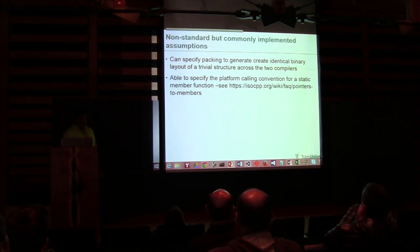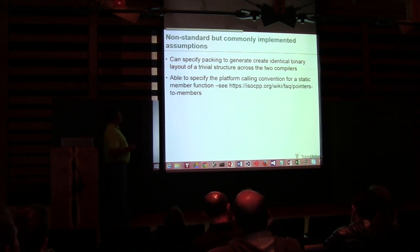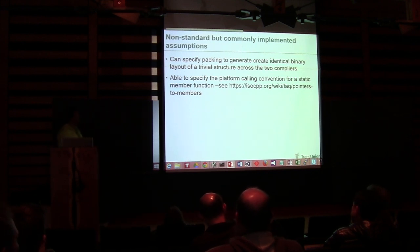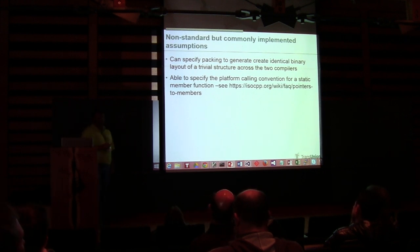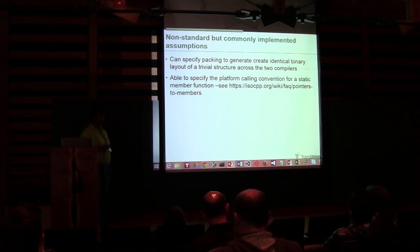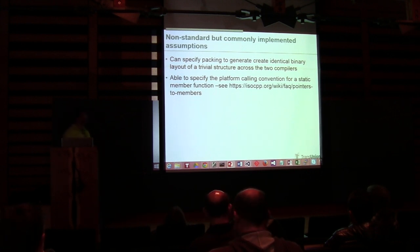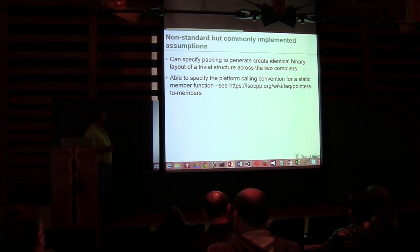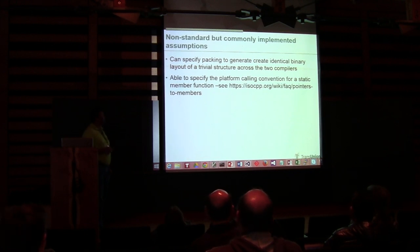There's a little asterisk on that. Our assumptions are commonly implemented: number one is that we can specify packing to generate and create identical binary layouts of a trivial structure across two compilers. Most things support pragma pack 1 for trivial-type structures, because a lot of platform ABIs rely on them. This works on MSVC, GCC, and Clang on Linux. We're also able to specify platform calling conventions for a static member function.